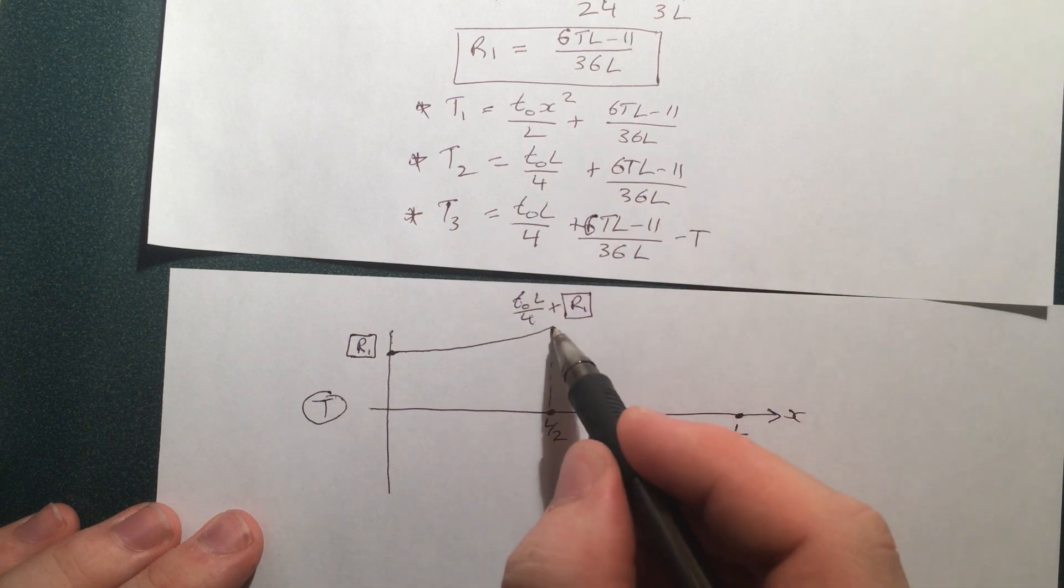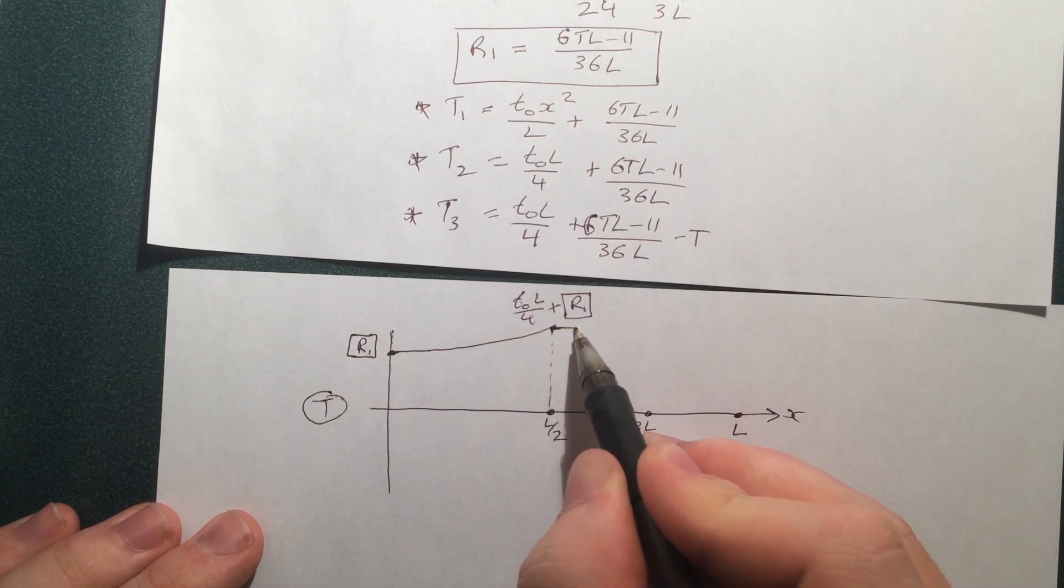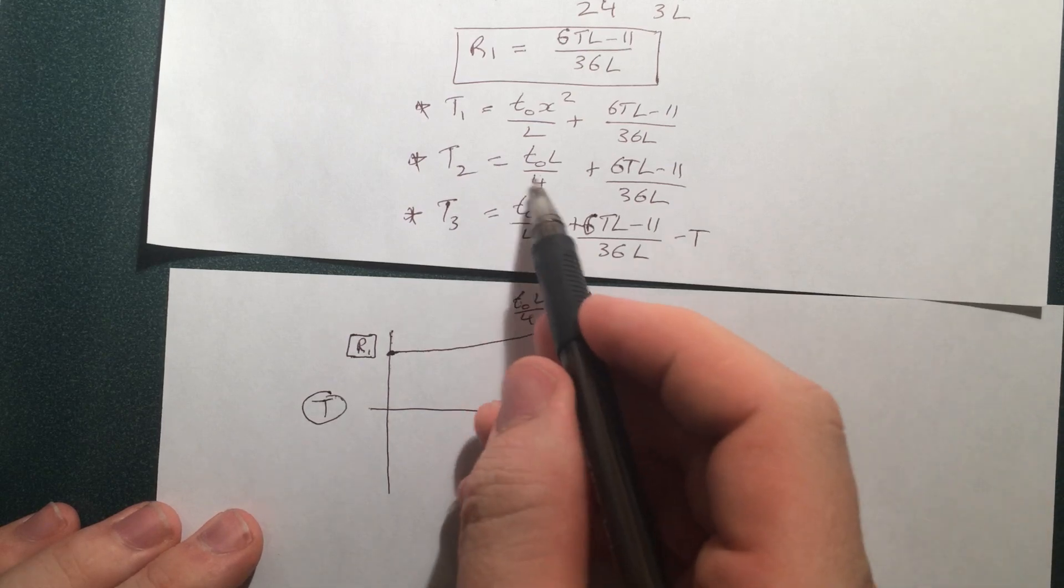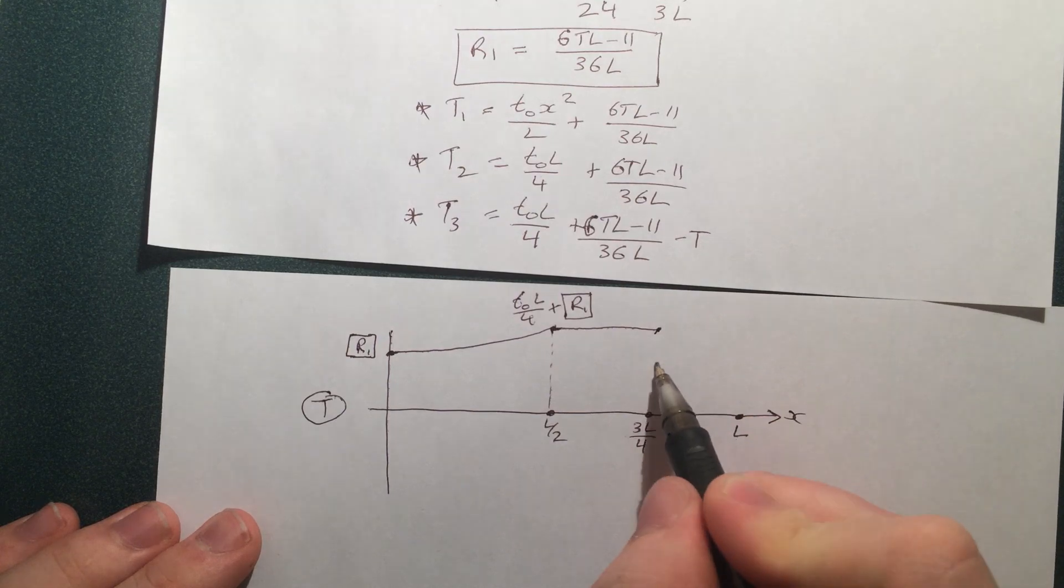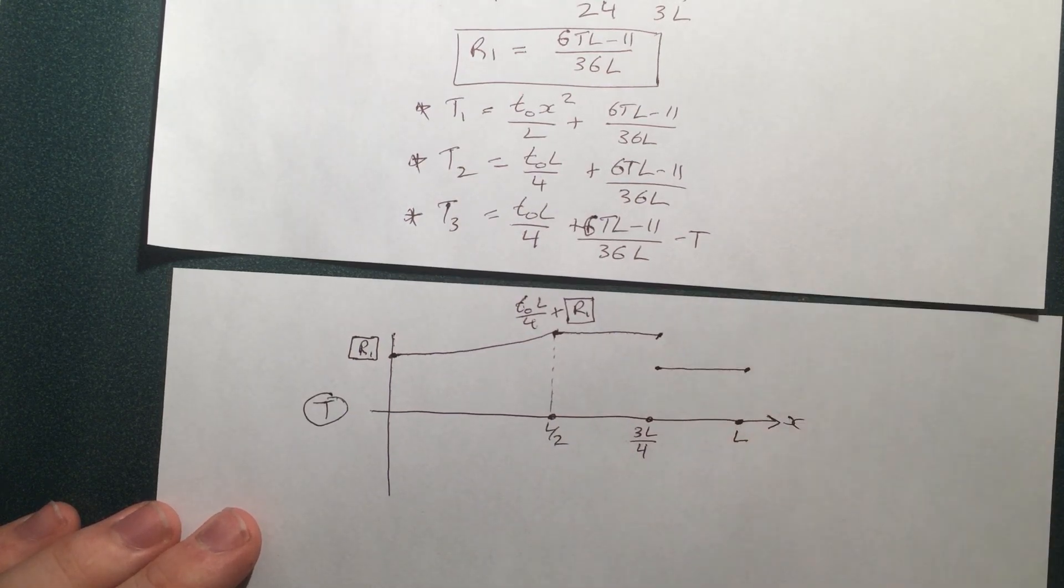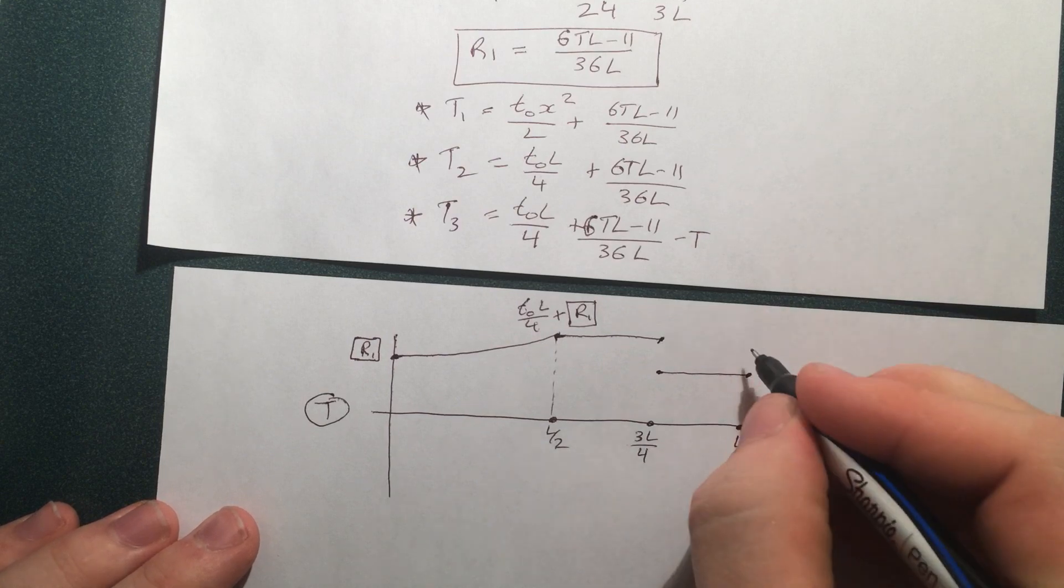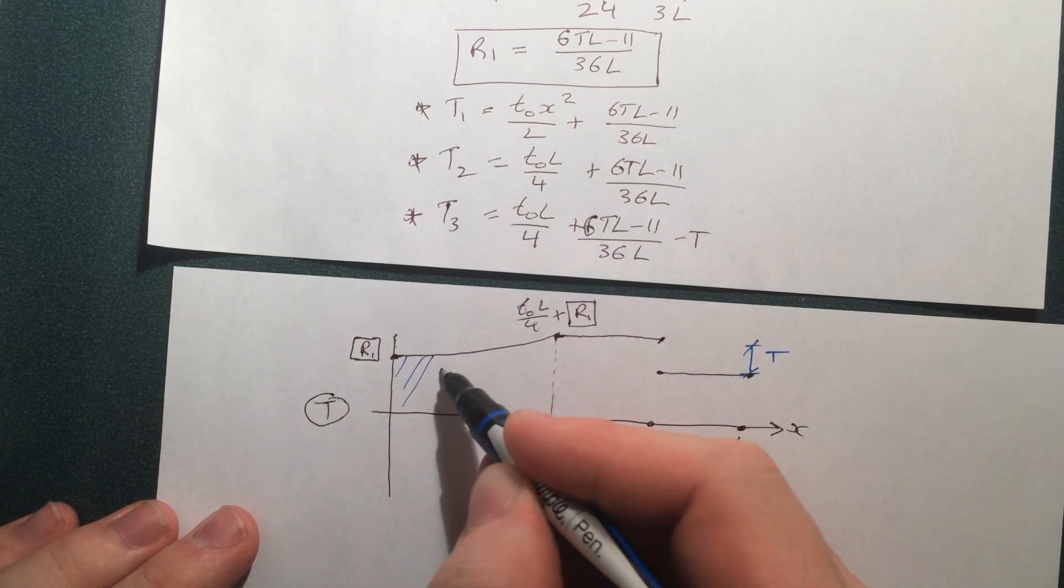And from there, it's just constant, because nothing depends on x. And here, it's exactly the same, where it is minusing off an amount, T. So basically, we can say that that jump there is T. So I'll color it in to make it look pretty.